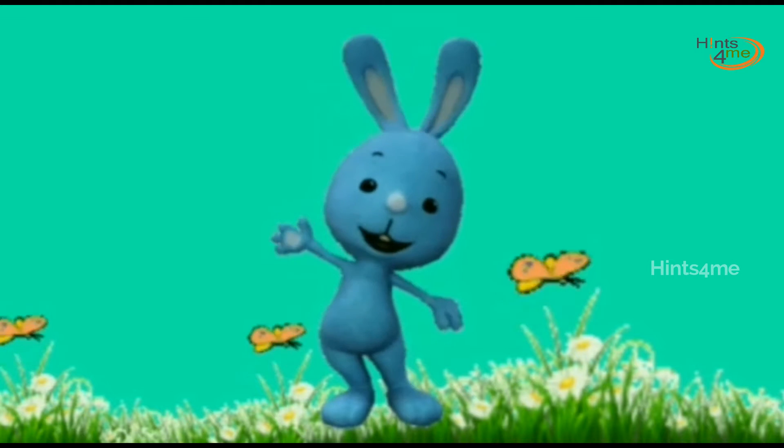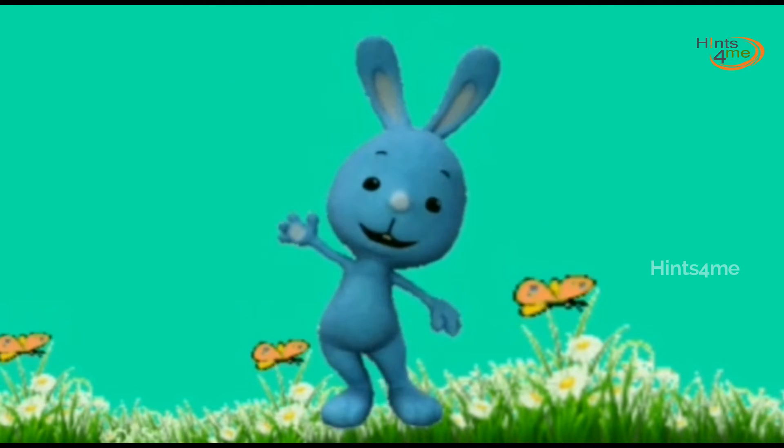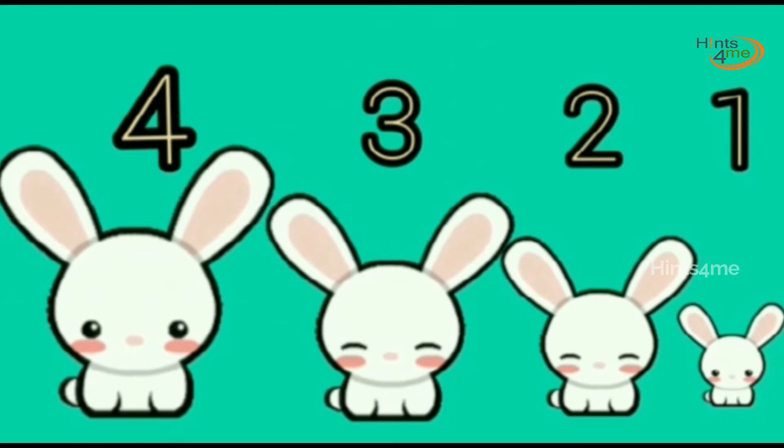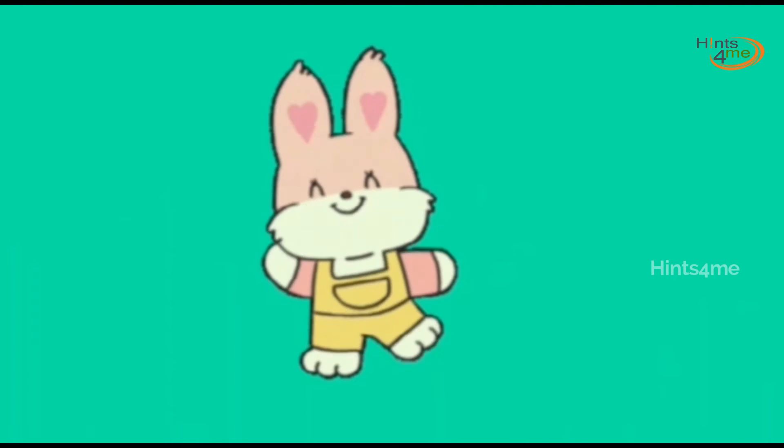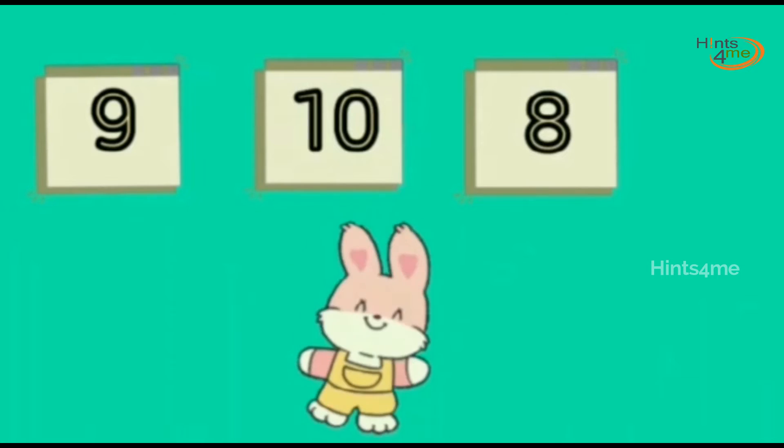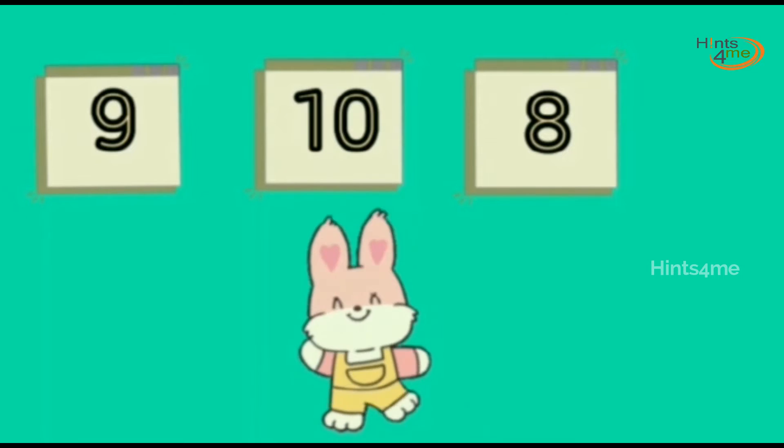Descending order means big to small. 4, 3, 2, 1. Here is the first set of numbers. Let's start counting backwards from 10 to 0.